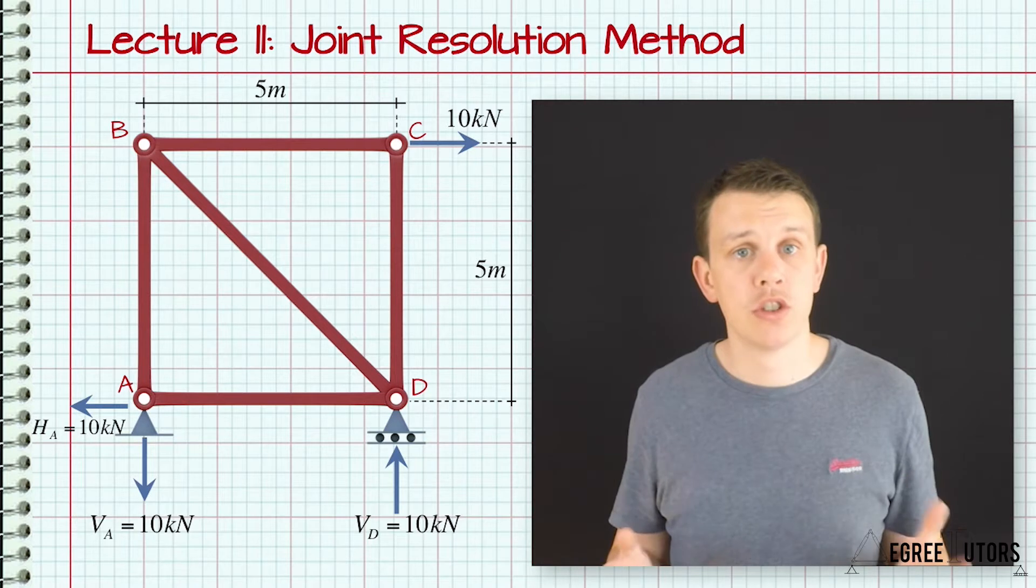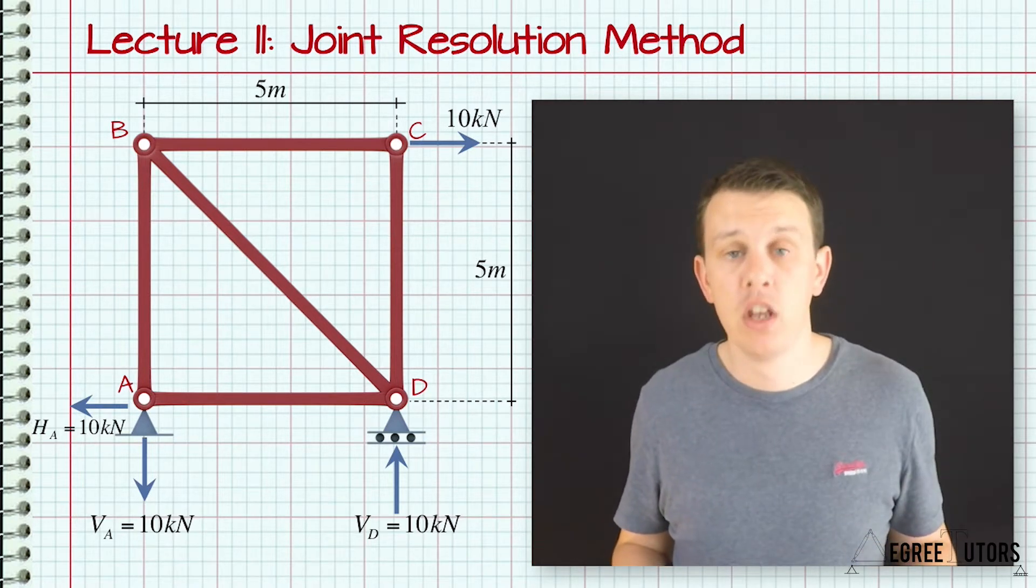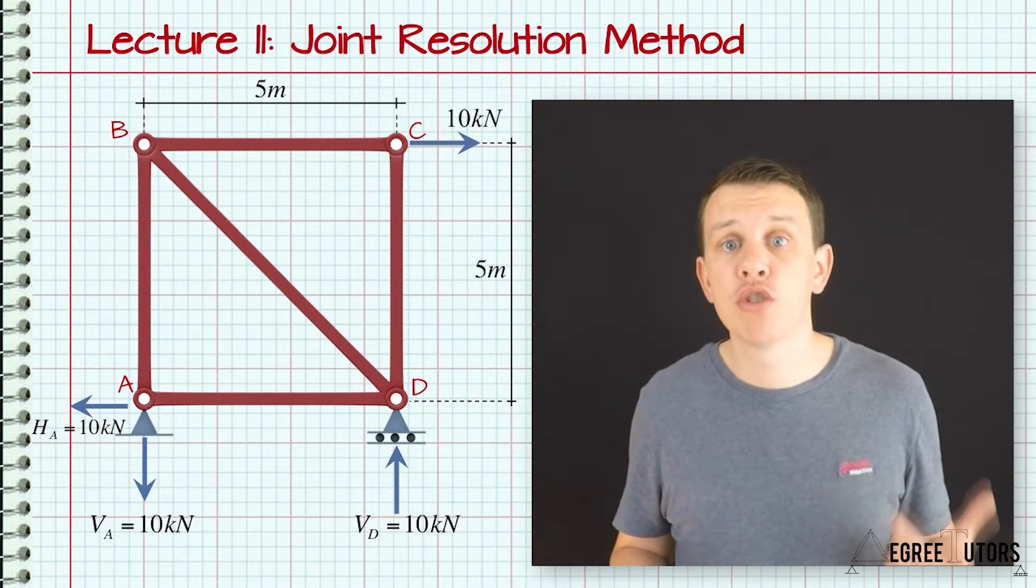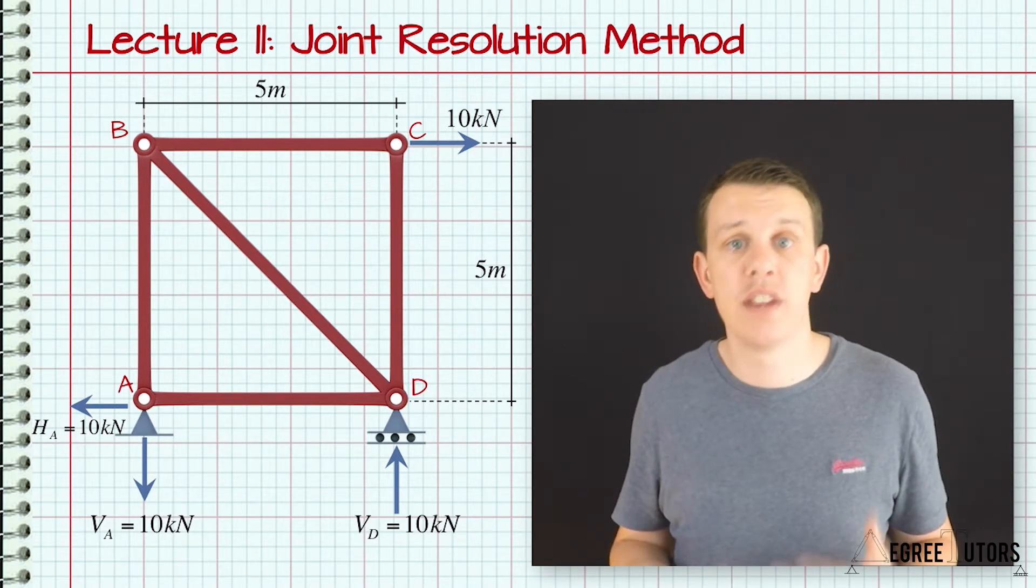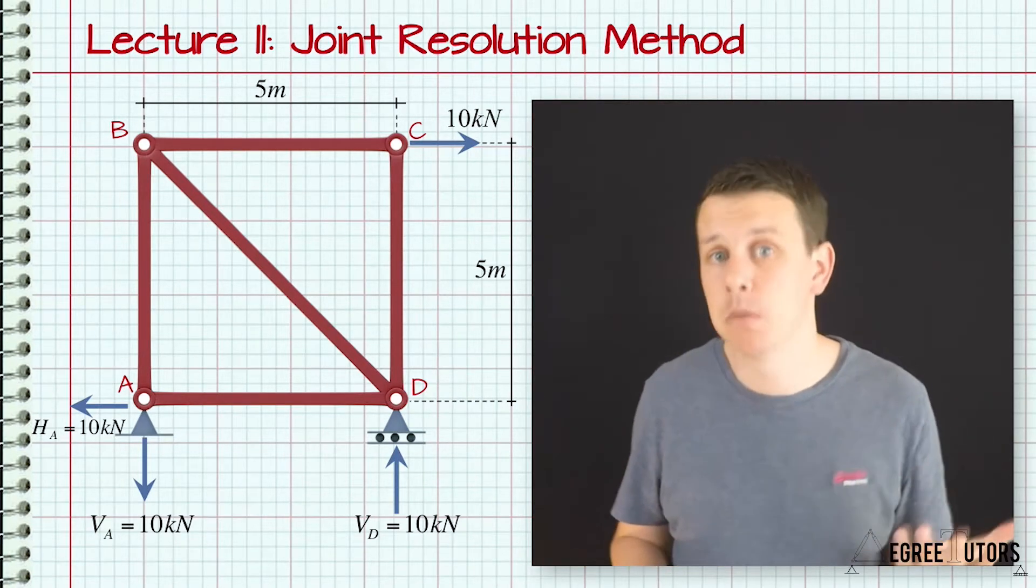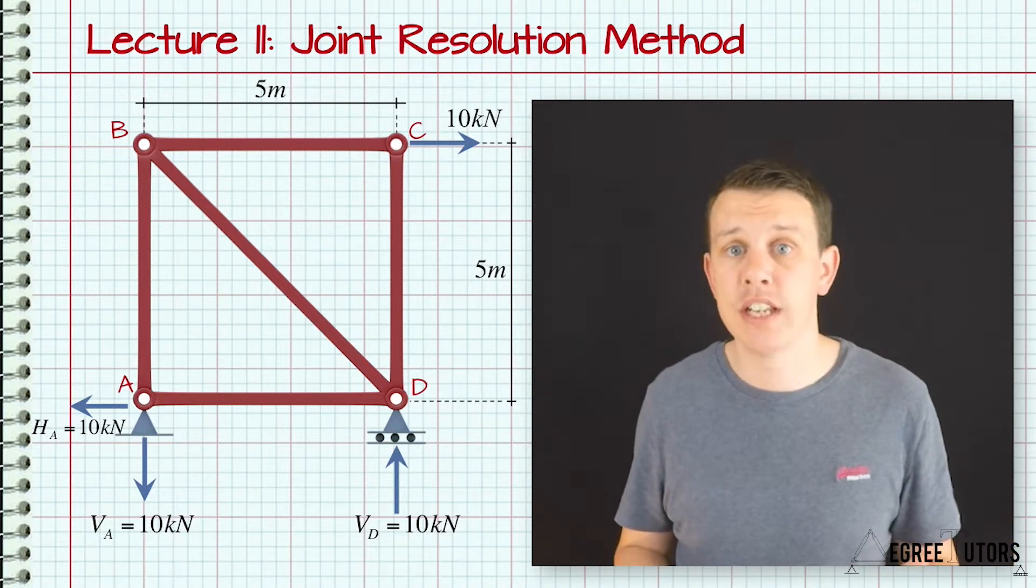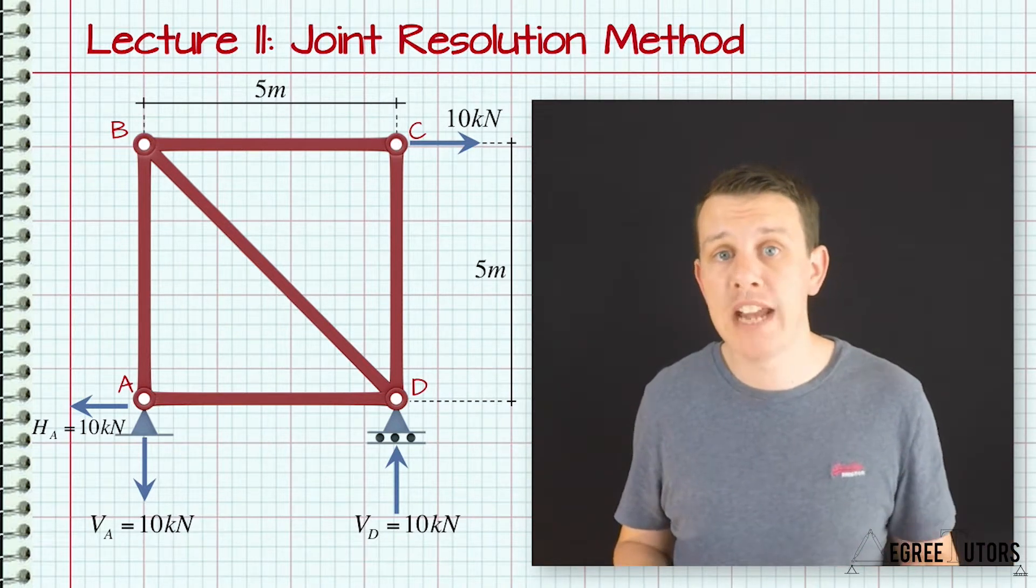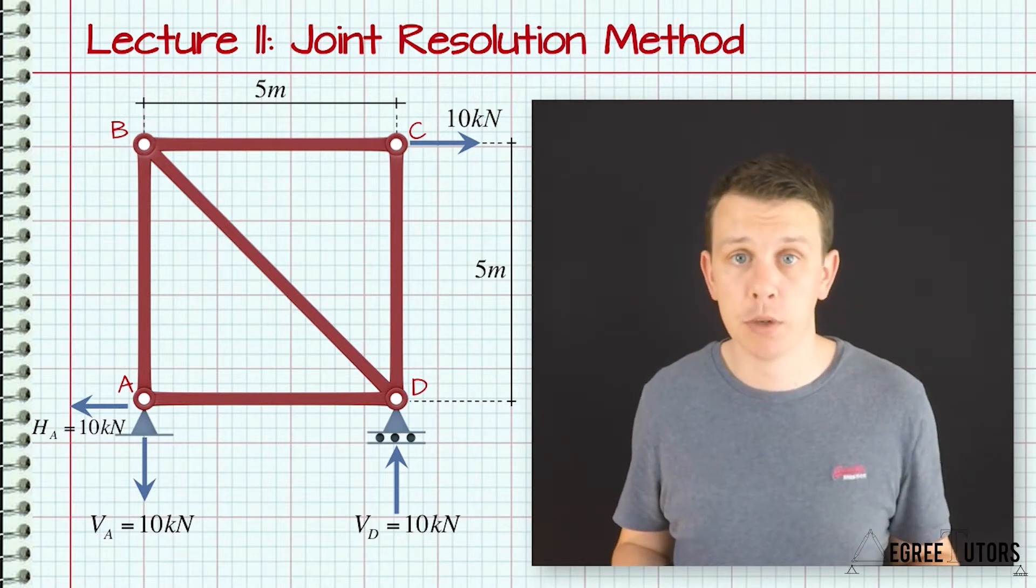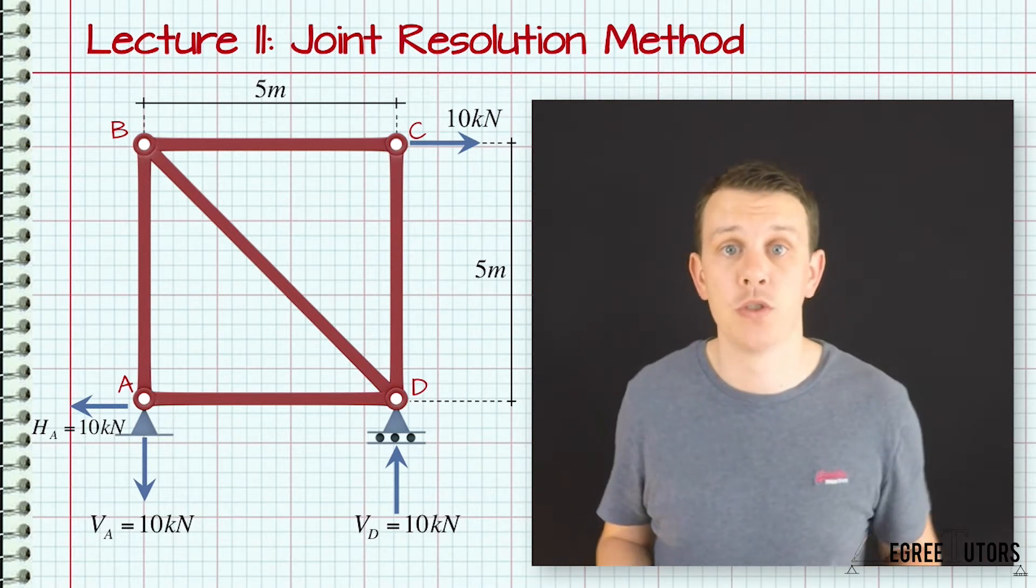Now, taking a look at our structure, think which joints we could start with and which joints we couldn't. Well, we can't start with joints B or D because there are three members entering those joints and therefore three unknowns. Remember, we can only solve each joint for two unknowns or a maximum of two unknowns. We could start with joints A or C because there's only two members entering joints A or C and therefore two unknowns. So our two equilibrium equations, our force equilibrium equations, will be sufficient to solve for those unknowns at those joints.